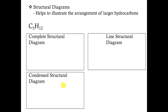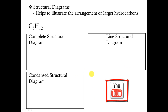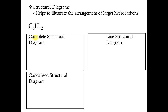Now that we understand the importance of carbon to organic chemistry, let's take a look at how structural diagrams can be used to illustrate the arrangement of larger hydrocarbons. For this example we'll be using the complete structural diagram, condensed structural diagram, and line structural diagram to represent C5H12, a simple hydrocarbon. Typically when we draw structural diagrams we like to start with the carbon backbone or carbon chain. Carbon has four valence electrons, which means it has room for bonding up to four different atoms.